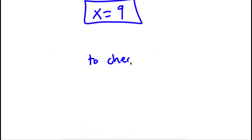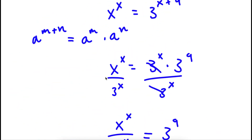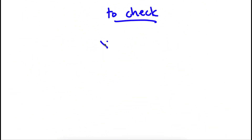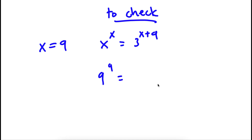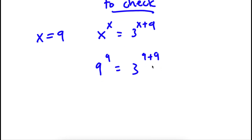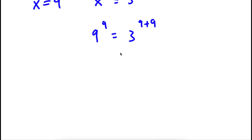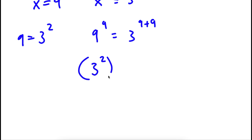Now, to check — my original equation was x to the power of x is equal to 3 to the power of x plus 9. We know that x is equal to 9, so now I have 9 to the power of 9 is equal to 3 to the power of 9 plus 9. Instead of computing 9 to the power of 9, I'll simply simplify both expressions. Since 9 is the same thing as 3 squared, I'll replace the base 9 with 3 squared. So I have 3 squared to the power of 9 is equal to 3 to the power of 9 plus 9.